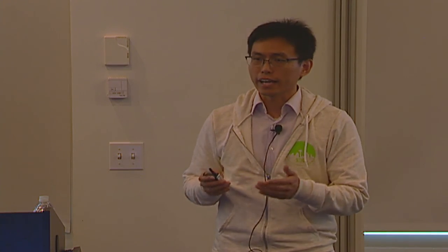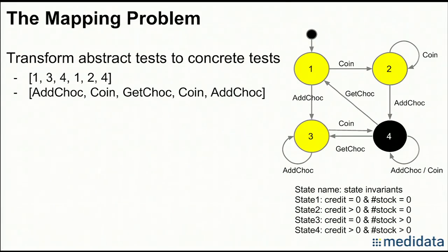Abstract tests have actions, and for each action we have to find the corresponding test code. Constraints included in the tests have to be covered as well. Transforming abstract tests to concrete tests is called the mapping problem. In a given test path, the add action may appear twice, the coin action twice, and get action once. If we have a complete set of test paths, these basic actions will appear multiple times. If we generate concrete tests for these abstract tests, testers may write lots of redundant test code, since the test code for the same action may be similar. So we want to automate this mapping process.